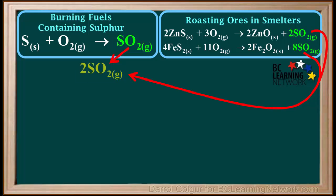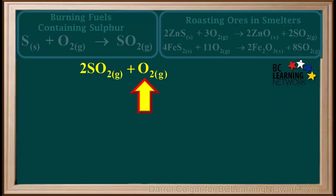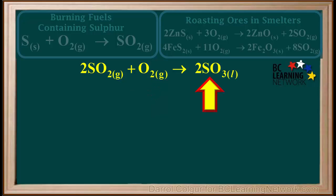Some of this SO2 in the air will react with oxygen in the air to produce sulfur trioxide SO3. This reaction often takes place on the surfaces of dust particles in the air.